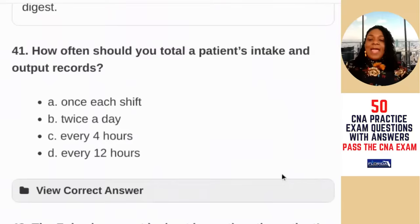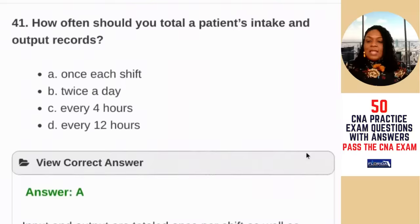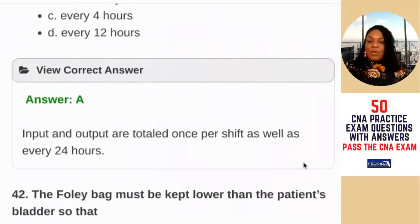Question 41: how often should you total a patient's intake and output records? — A) once a shift; B) twice a day; C) every four hours; D) every 12 hours. Normally you do your totals at least once per shift — whether that's a four, eight, or 12-hour shift. The answer is A — total intake and output once per shift as well as every 24 hours.